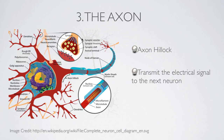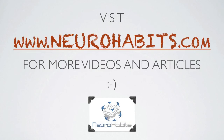Instead of receiving electrical signals from nearby neurons, the synaptic terminal will transmit the incoming impulse onto the dendrites of other neurons. Don't forget to jump over to www.neurohabits.com to read the full article. Thank you very much.